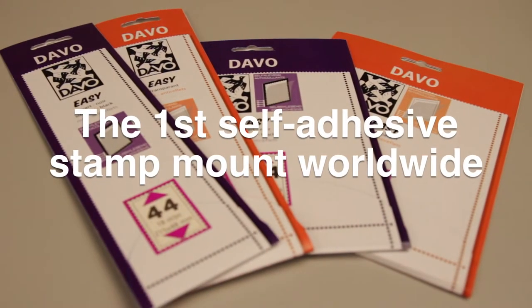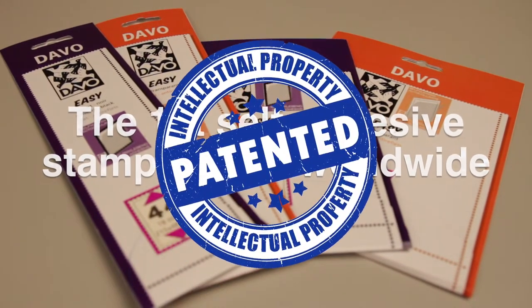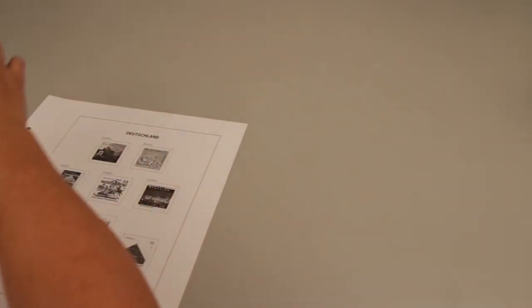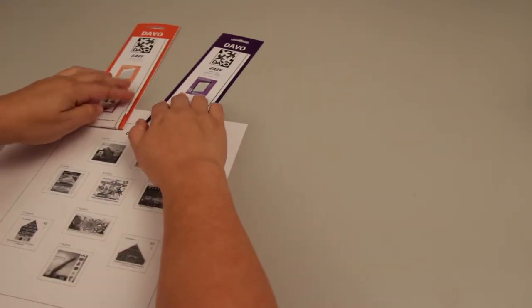Now we have the new Davo Easy, a self-adhesive mount that is easy to use and does not require water, a sponge, or a chamois. As a result, the problems of the past have disappeared.